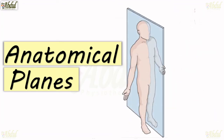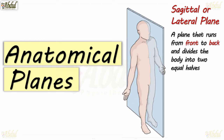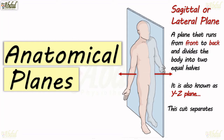Number two is the sagittal or lateral plane — a plane that runs from front to back and divides the body into two equal halves, as you can see in the diagram. It is also known as the YZ plane, and this plane separates the body into right and left portions.